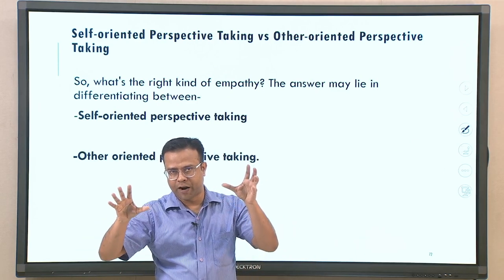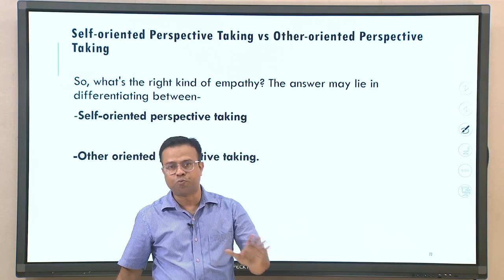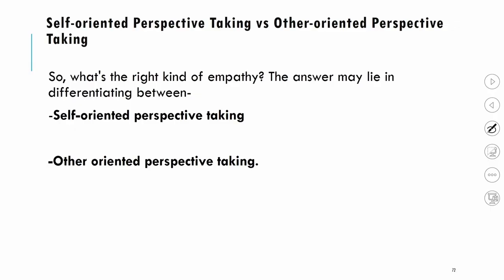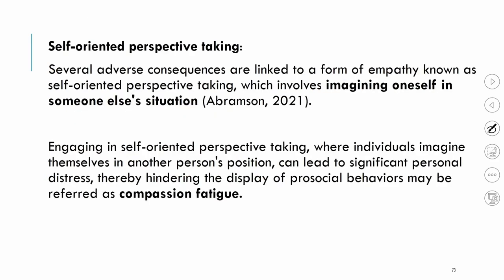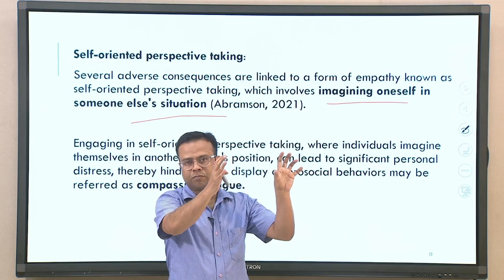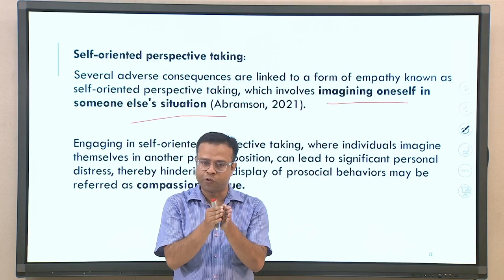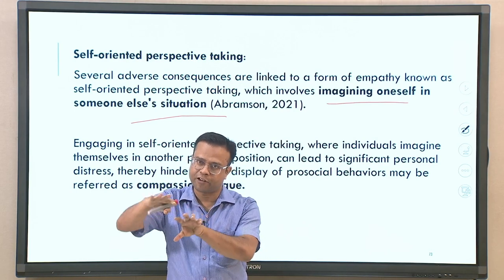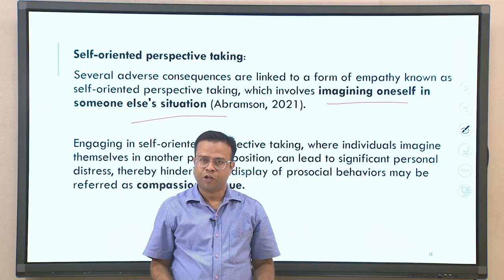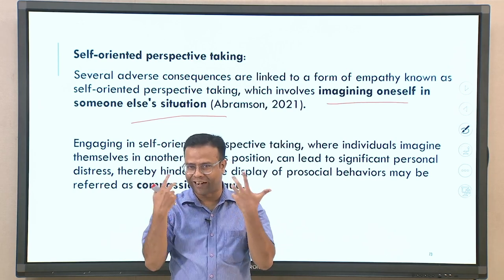There are two types of empathy in terms of how a person empathizes with another. One is self-oriented perspective-taking and the other is other-oriented perspective-taking. Self-oriented empathy is about imagining oneself in someone else's situation — you put yourself in their position, and if the other person is suffering, you are also suffering. This can be very draining in some sense and could lead to fatigue and may not lead to many positive outcomes, even though it can lead to good intentions for the other individual.